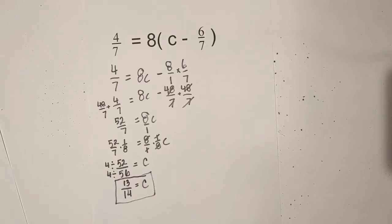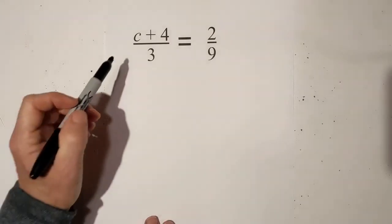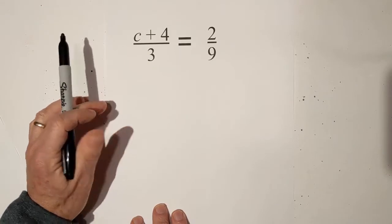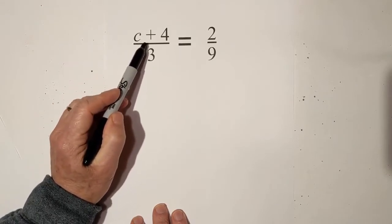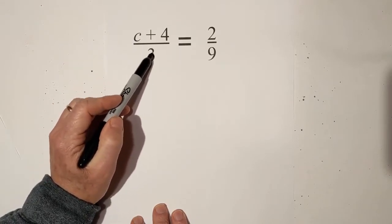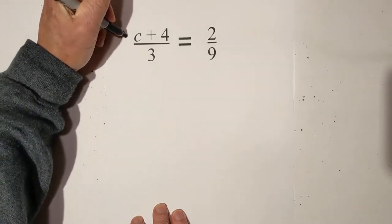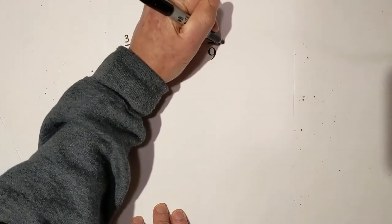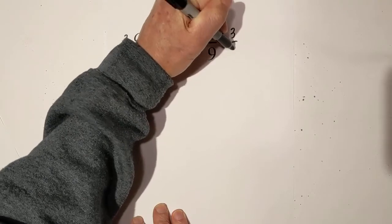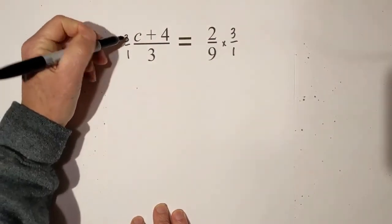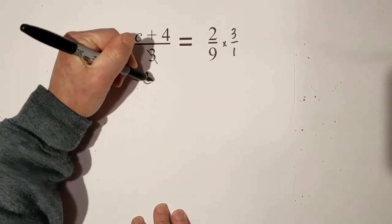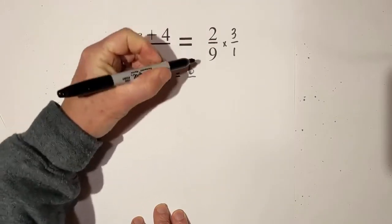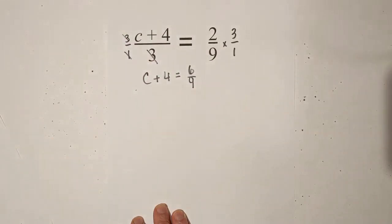Let's work another one. Now for this one I need to get c by itself. So what strategy can I do for this? Well, we have division because it's c divided by three. So what we can do is we can multiply it, so we're going to multiply it by three over one, and that will cancel. Remember what I do on one side, I've got to do on the other. So I'm going to bring this down. These cancel. So now I'm left with c plus four equals two times three is six, and nine times one is nine.